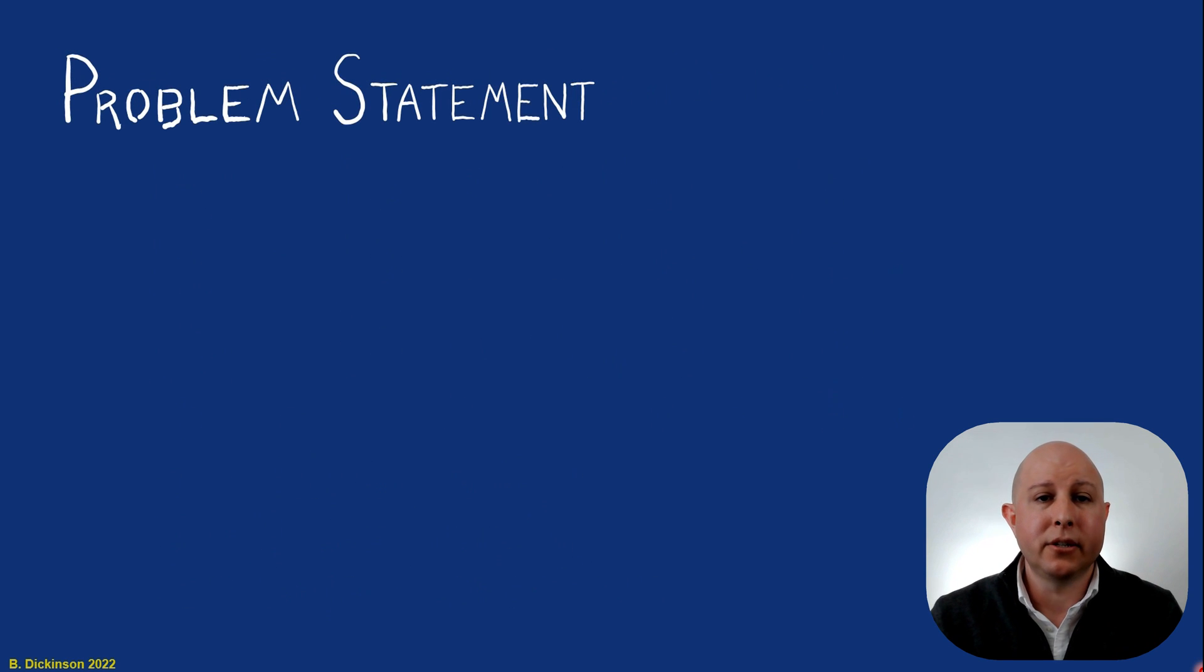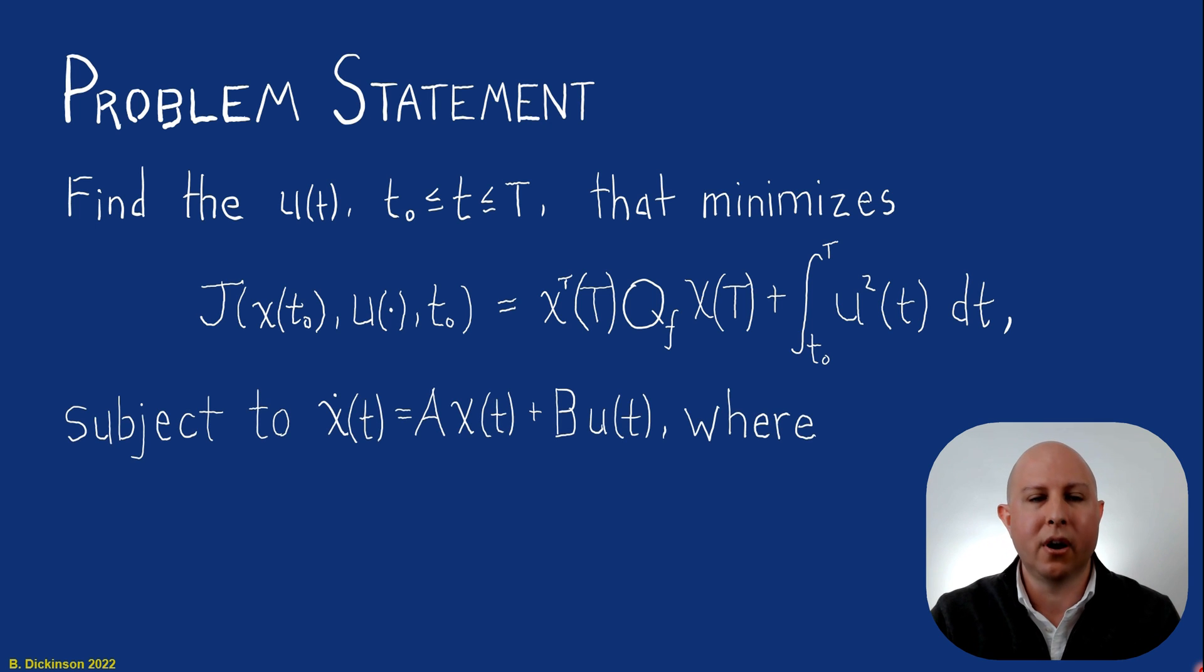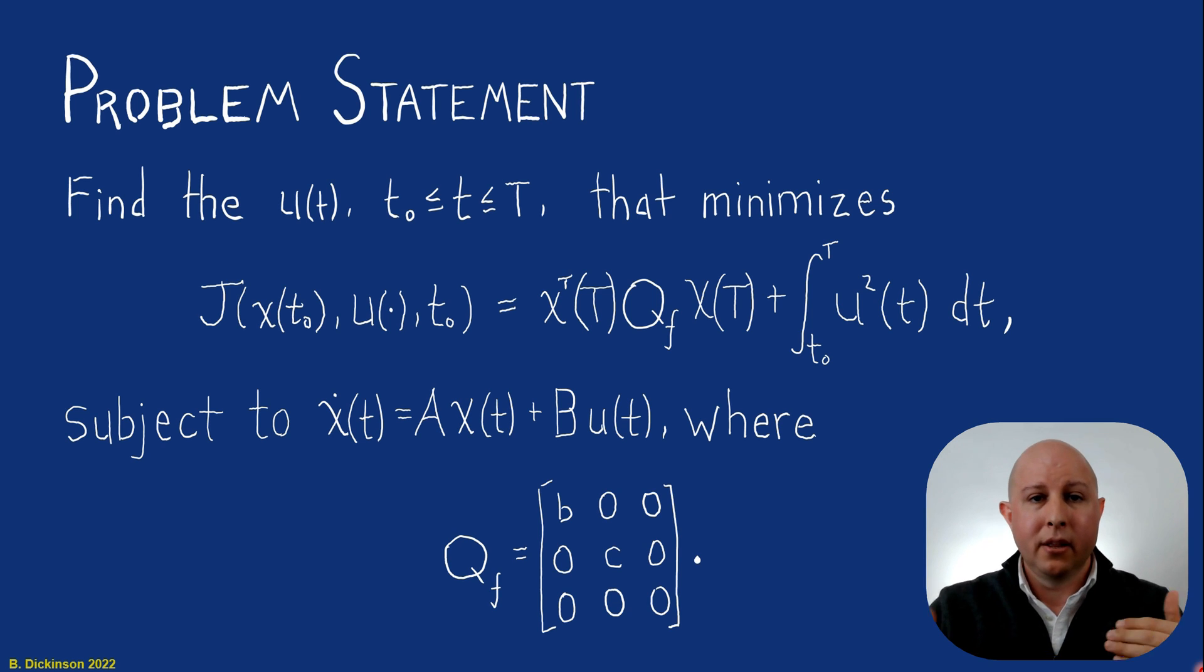So we can use these kinematics in an optimal control problem statement just as we had before. We want to find the control over some finite time interval that minimizes this cost function. It has a terminal cost. It has a control effort cost. We're subject to the linear time invariant kinematic equations. And our terminal cost matrix QF have positive penalties on the diagonal that correspond to Z1 and Z2.